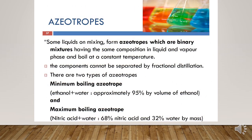Now, the last part of Raoult's law: azeotropes. Azeotropes are binary mixtures that have the same composition in the liquid and vapor phase and boil at a constant temperature. They are also called constant boiling mixtures. The components of an azeotropic mixture cannot be separated by fractional distillation, because they boil at a constant temperature.